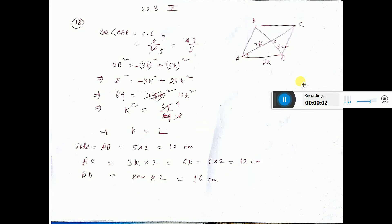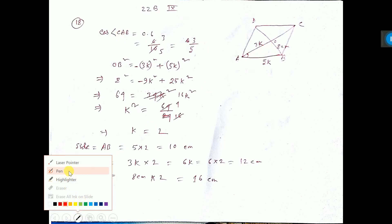In this sum, it is given cos CAB. Cos CAB means which angle CAB, that is this angle.